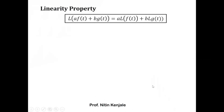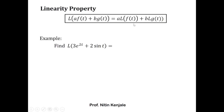Now we see an example of this linearity property — how one can apply it to Laplace transformation. Assume the Laplace of 3·e^(2t) plus 2·sin(t). Here f(t) is e^(2t) and g(t) is sin(t), a is 3 and b is 2. By linearity property we apply the Laplace on every term, so we have 3·L{e^(2t)} plus 2·L{sin(t)}.